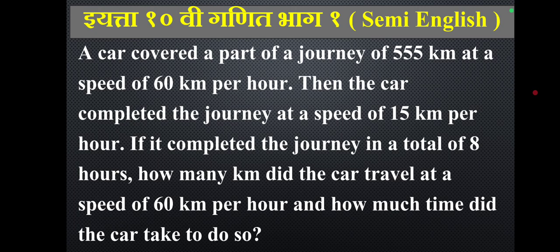A car covered part of a journey of 555 km at a speed of 60 km per hour, then completed the journey at a speed of 15 km per hour. If the total journey took 8 hours, how many km did the car travel at 60 km per hour and how much time did it take?